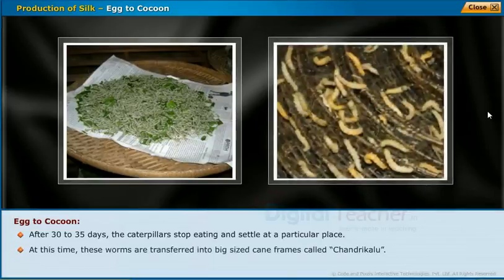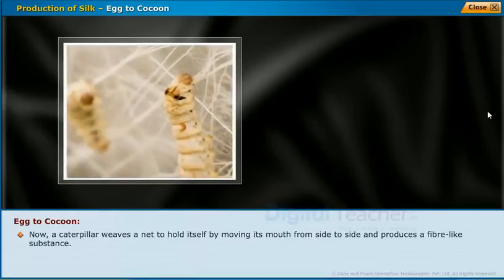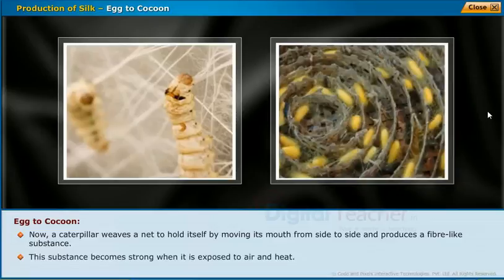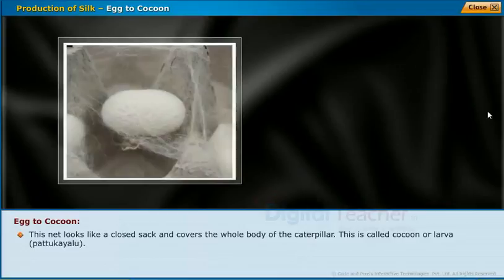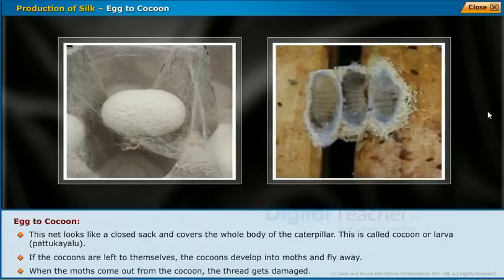After 30 to 35 days, the caterpillars stop eating and settle at a particular place. They are transferred into big-sized cane frames called chandrikalu. The caterpillar then weaves a net by moving its mouth from side to side and produces a fiber-like substance that becomes strong when exposed to air and heat. This net covers the whole body of the caterpillar and is called a cocoon, or larva patukailu.